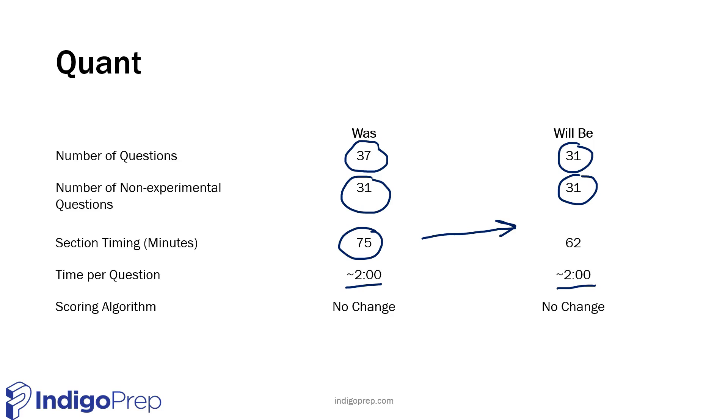Same thing on the verbal side. There were five experimental questions counting in the 41. Now you just have 36, and those are the numbers that count. Timing is more or less 1:45 per question. No change to the scoring algorithm. So again, this is a win. Less fatigue, higher score.